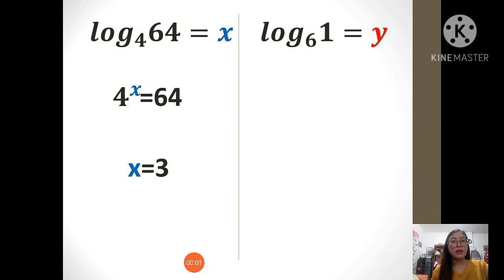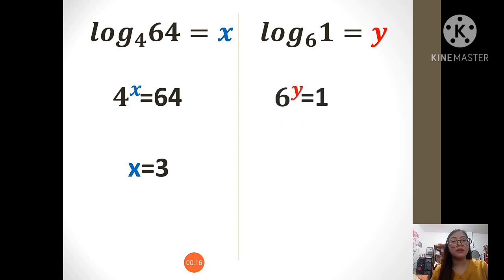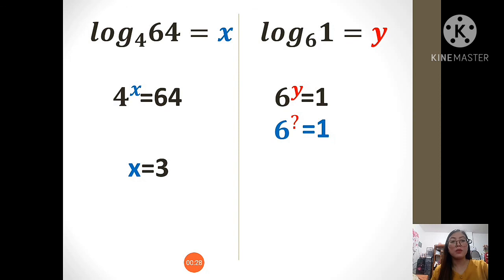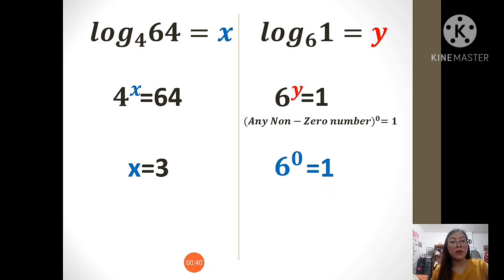Another interesting example. Log of 1 to the base of 6 equals y. We have to rewrite this first in exponent. So, it will become 6 raised to y is equals to 1. This logarithmic expression is asking: 6 raised to what number will give us 1? Do you remember a property of exponents? Any non-zero number raised to 0 is equals to 1. Hence, 6 raised to 0 is equals to 1. Therefore, y is equals to 0.